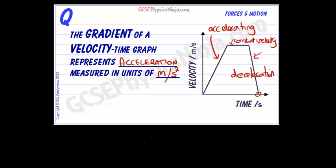Watch out for the spelling of deceleration - it's only got one C in it compared to acceleration, which has got two. So the gradient of a velocity-time graph represents acceleration and it's measured in units of meters per second squared.